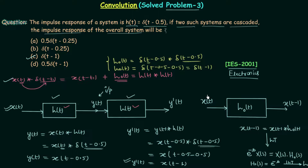We obtained the solution in just two steps compared to the much longer calculation earlier. That's why it is important to remember all 10 convolution properties. If you use them, you will solve questions in very little time, which is what is required in competitive examinations. This is all for this lecture; now we will move to the homework problem.